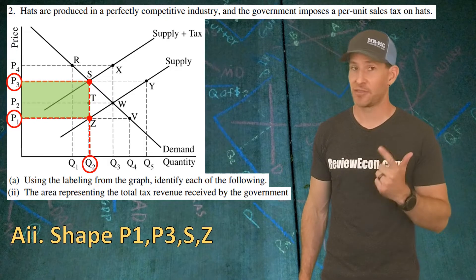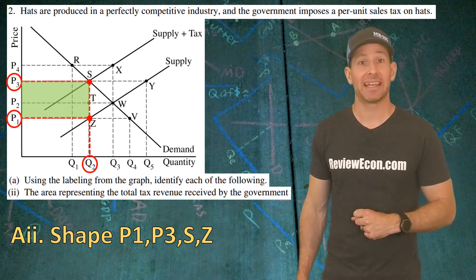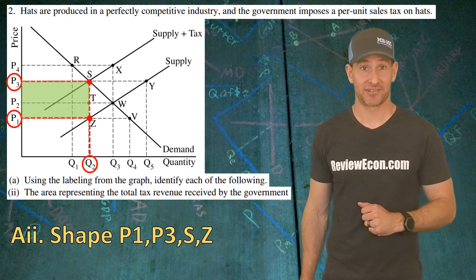Here we only have to identify the shape, so you can do that by looking at the points that are on each of those corners: P1, P3, S, and Z. That is the shape that equals the tax revenue here, and that's your answer.